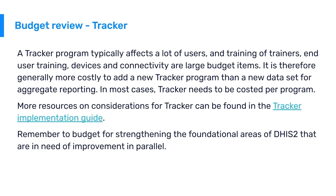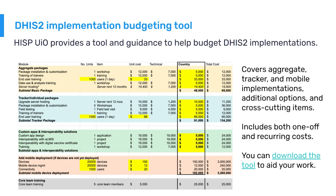In summary, a tracker program affects more users — end-user training, devices, connectivity, and support are much larger budget items, making tracker generally much more costly than aggregate. Remember to budget for strengthening the foundational DHIS2 domains in parallel to ensure project success. UIO has several tools to support with budgeting.